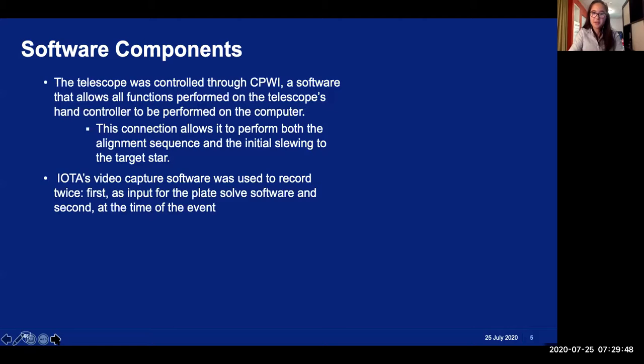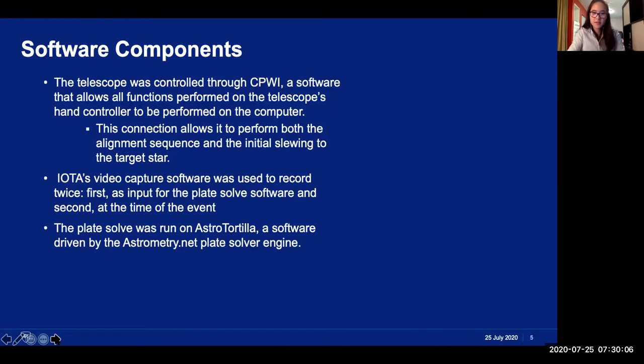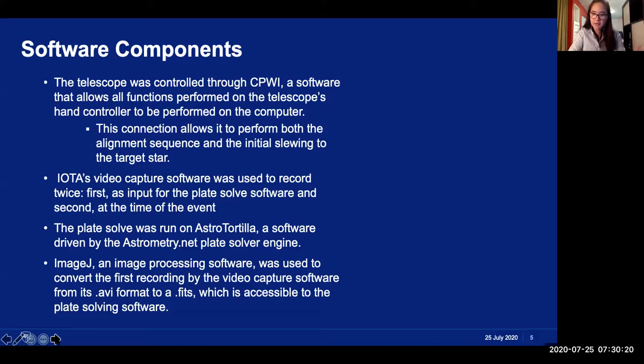I also used IOTA's video capture software to record twice during the process. Once after the initial positioning of the telescope as input for a plate solve, and the second time at the time of the event as normal. The plate solve was run through AstroTortilla, which accepted FITS images as input and then processes them, correct the telescope's alignment. But, since the video capture software saves files in a .avi format, I used ImageJ to convert the file format appropriately.